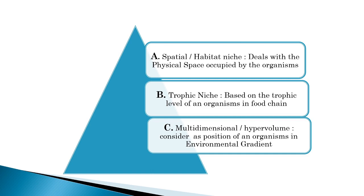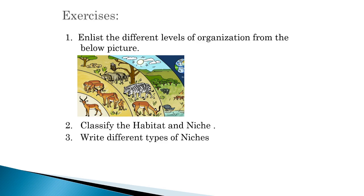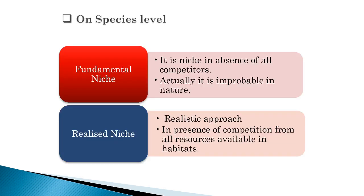There are different types of niches. Spatial or Habitat Niche deals with the physical space occupied by the organism. Trophic Niche is based on the trophic level of an organism in the food chain, and the Multidimensional or Hypervolume niche considers the position of an organism in the environmental gradient. On the basis of species level, there are Fundamental Niche and Realized Niche. The Fundamental Niche exists in the absence of all competitors — it is actually improbable in nature — while the Realized Niche has a realistic approach, existing in the presence of all competitors with all resources available in the habitat.